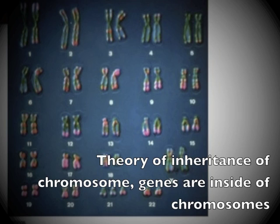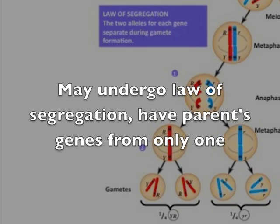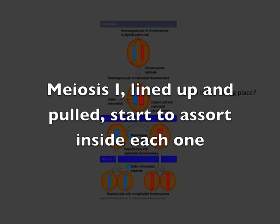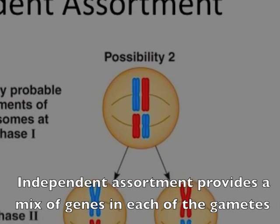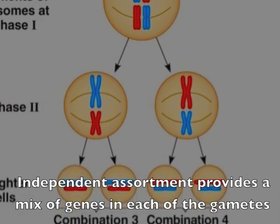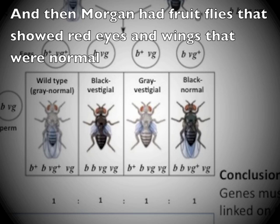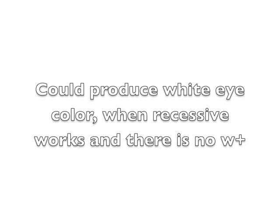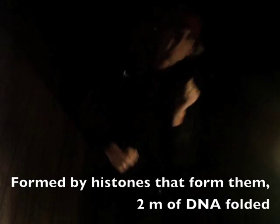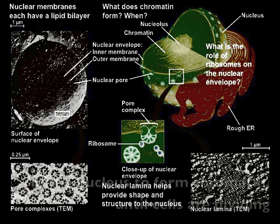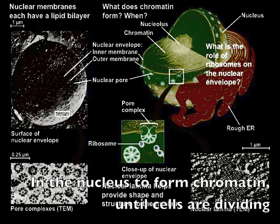Period of inheritance of chromosomes — genes are inside of the chromosomes and may undergo the law of segregation. Parents' genes come from only one; meiosis one: lined up and pulled, stuck to a spindle, inside each one. Independent assortment provides a mix of genes in each of the gametes. Morgan had fruit flies that show red eyes and wings that were normal. Could produce white eye color when recessive works — there is no W+. That happens more frequently inside of sex-linked chromosomes, formed by histones that fold in: two meters of DNA folding in a nucleus to form chromatin, until cells are divided.